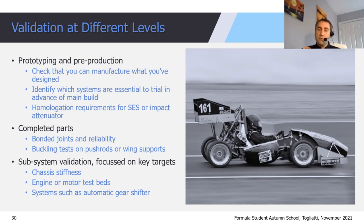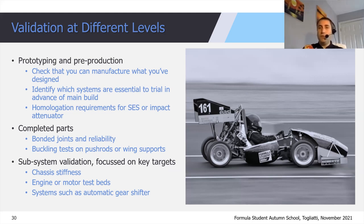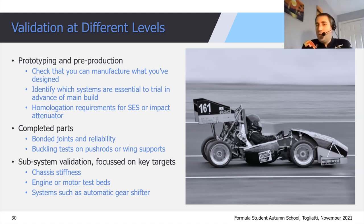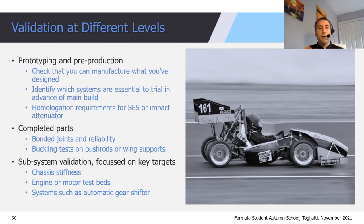You also have the ability to do subsystem validation — the third level of validation. Focus on key targets here. If your sensitivity sweeps said that chassis torsional stiffness was really important to overall car performance, spend the time checking you achieved your target. Conversely, if chassis torsional stiffness showed no sensitivity in simulation — a range of values with no effect — maybe don't spend weeks doing extensive measurements on it. You may wish to do some checks as part of validating your simulation, but focus on what your key targets were and how you validate whether you've achieved those.